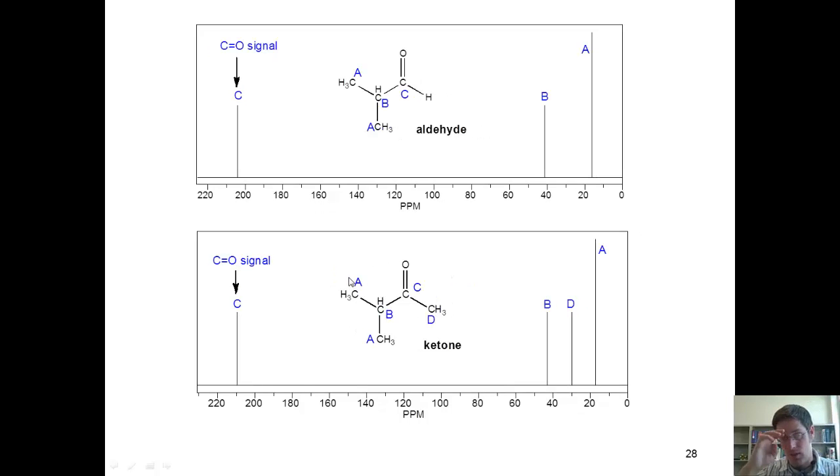Here are our next two answers. I hasten to point out again, this carbonyl carbon is an aldehyde carbon. Where does it show up? Above 200. This is a carbonyl carbon for a ketone. Where does it show up? Above 200. I emphasize that for a reason that will become apparent shortly.